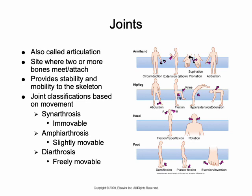Each of these three structural classifications — fibrous, cartilaginous, or synovial — can be subdivided according to the shape and contour of the articulating surface and the type of motion the joint permits. For example, upper extremities can form movements like circumduction, extension, supination, pronation, and adduction; hips and legs can move by abduction, adduction, flexion, hyperextension, and extension; the head has flexion, hyperflexion, and rotation; and the foot has dorsiflexion, plantarflexion, and eversion.